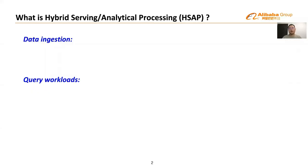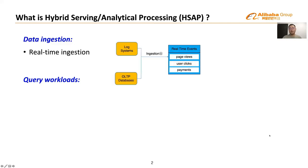First, I will explain what the HSAP scenario is, using a recommendation system in Alibaba. The recommendation system makes personalized recommendations for users. This scenario combines multiple data ingestion and query workloads. The system ingests a huge amount of user activity events in real-time. These events include page views, user clicks from the log system, and payment records from OLTP databases.